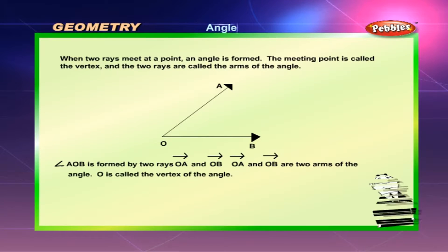Geometry: Angle. When two rays meet at a point, an angle is formed. The meeting point is called the vertex and the two rays are called the arms of the angle. Angle AOB is formed by two rays OA and OB. OA and OB are two arms of the angle. O is called the vertex of the angle.